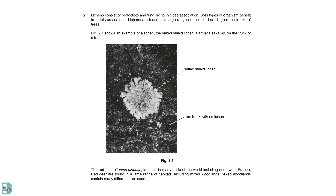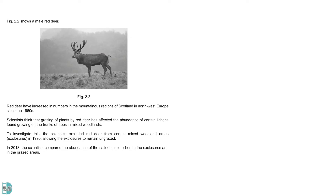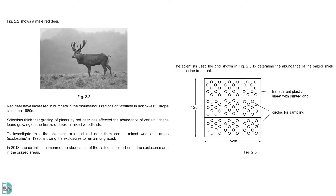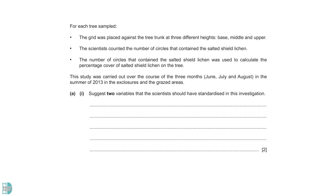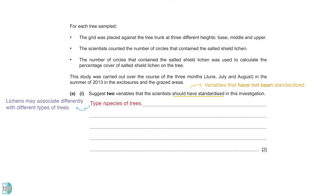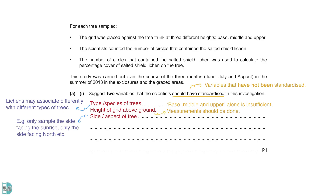Question 2 is about lichens and red deer. Scientists think that the grazing of plants by red deer has affected the abundance of certain lichens. They use a grid to sample lichens in the exclosures and the grazed areas, and percentage cover of the lichen is calculated to show its abundance. A1 suggests two variables that the scientists should have standardised. They should only include one species of trees, because lichens may associate differently with different types of trees. The height of the grid above ground should be controlled — stating base, middle and upper alone is insufficient; measurements should be done to fix the height above ground. Sampling should be done on the same side of trees; for example, only sample the side facing the sunrise as light exposure may affect their growth.